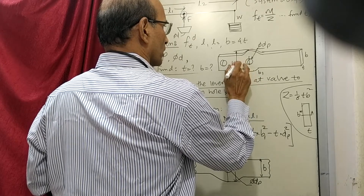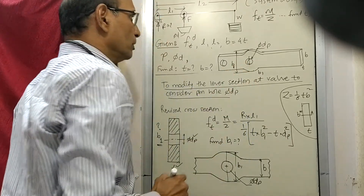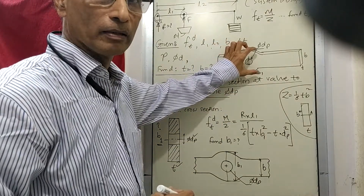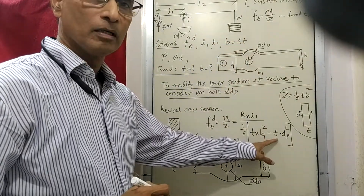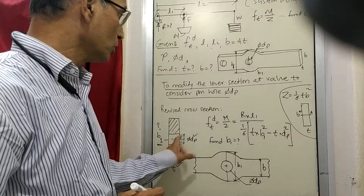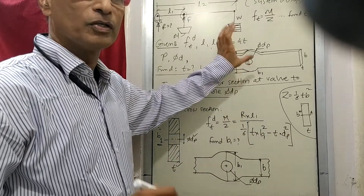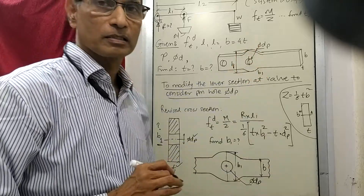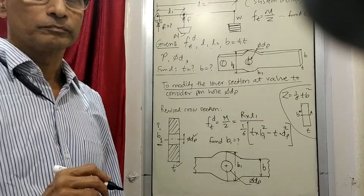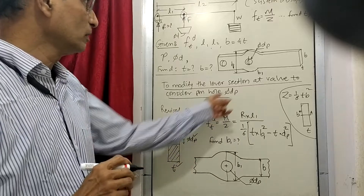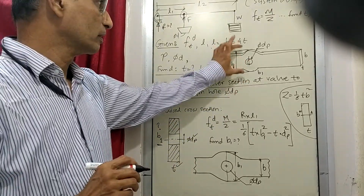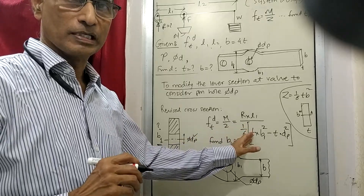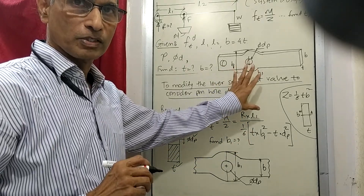We have increased b to b1 as per this equation, by considering b1 here, accounting for the pin hole, so that the cross section is still as strong as required even though there is a hole cut here. This way you can cut one hole and increase the cross section to make it suitable for taking the bending stress. This part is now designed up to this much.